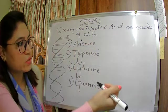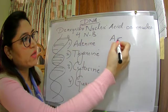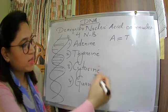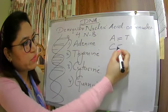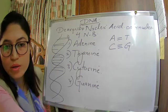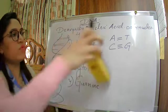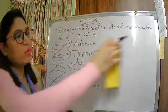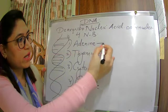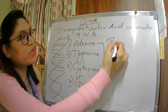Adenine always pairs with thymine via a double bond, and cytosine always pairs with guanine via a triple bond. Out of these four bases, two terms you should know: adenine and guanine are called purines.